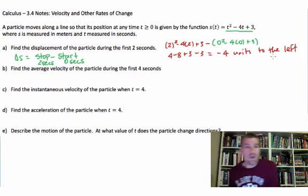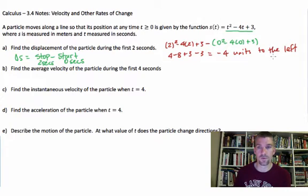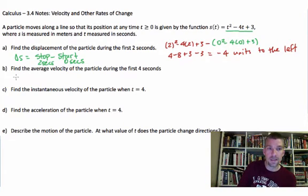Find the average velocity of the particle during the first four seconds. Average velocity, instantaneous velocity is not quite what we're ready for here yet because they want to know the average during while the first four seconds is taking place. So what does that mean? That means that we're going to have a function that looks like the change in position divided by the change in time, so Δs over Δt.